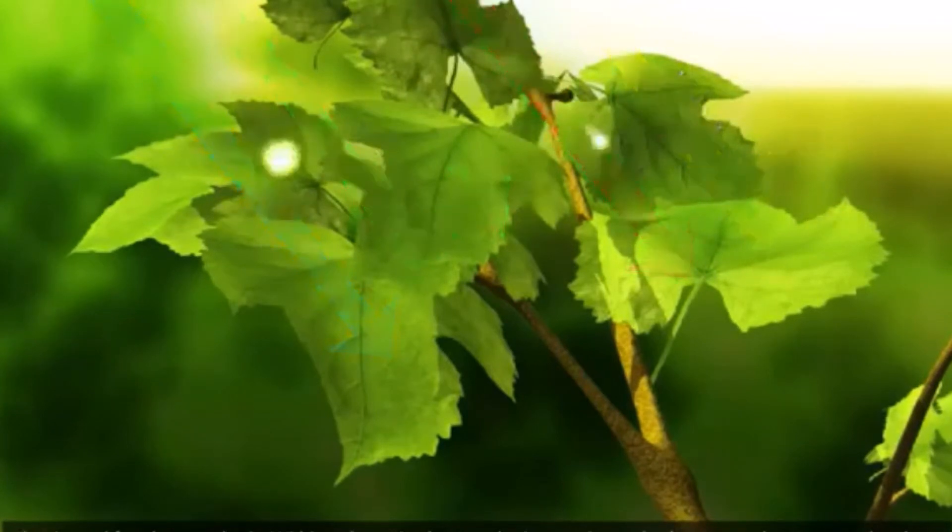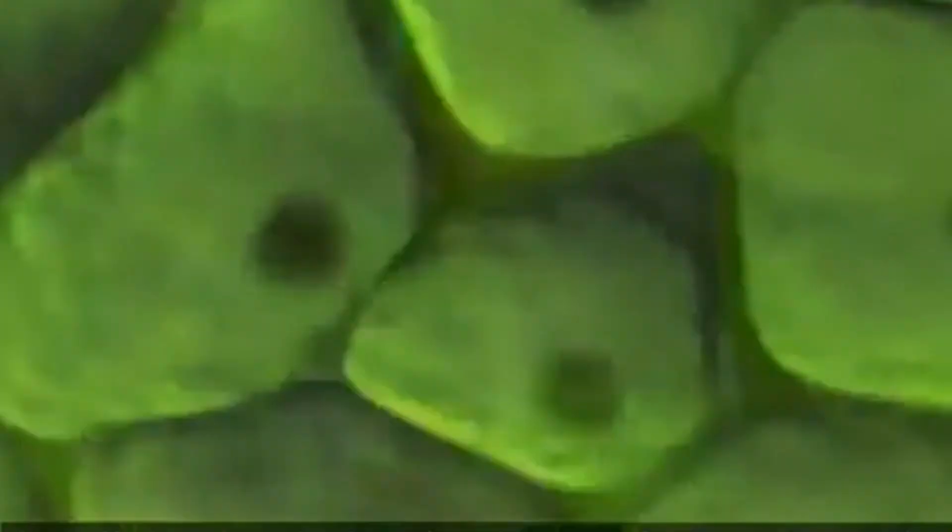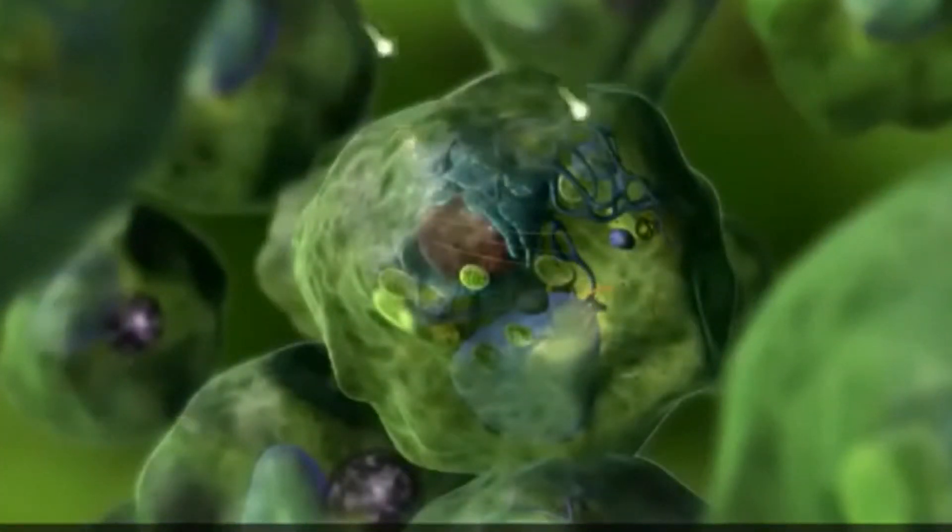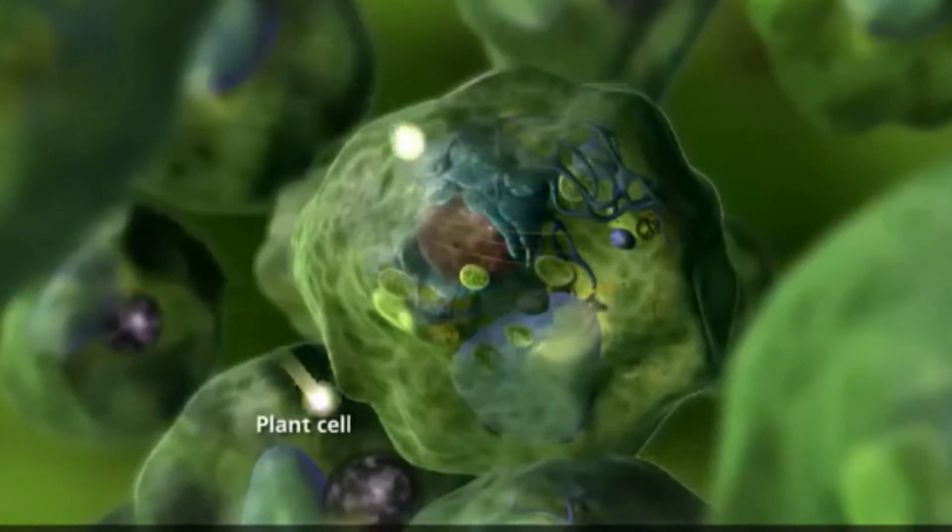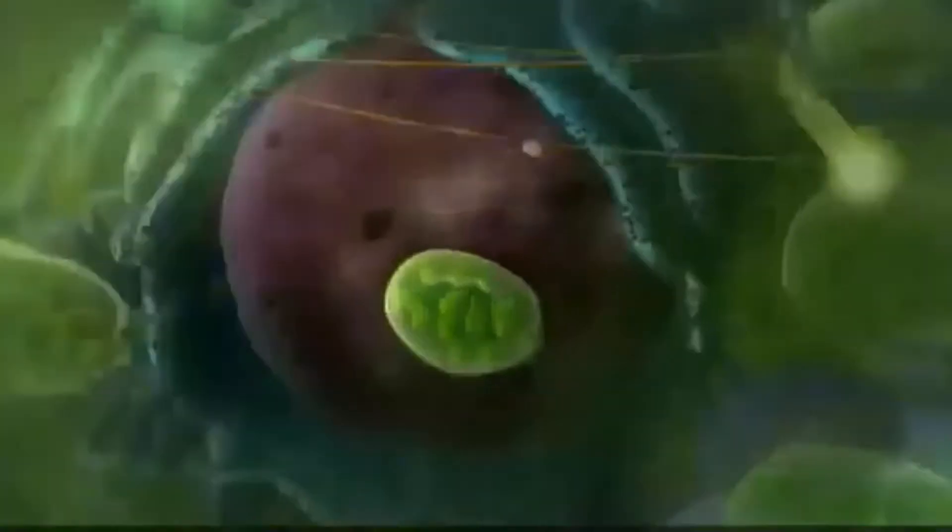Within eukaryotic photosynthetic organisms, also known as photoautotrophs, the chemical reactions of photosynthesis occur within plant cells in specialized structures known as chloroplasts.